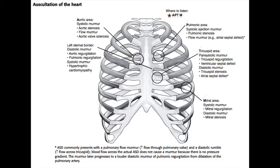The systolic murmur of hypertrophic cardiomyopathy is caused by a collapse of the left ventricle during systole. You want to listen to the area just above the left ventricle, which is at the left sternal border, which is also just near the left ventricular outflow tract — the area just below the aortic valve. This is why you hear the murmur of hypertrophic cardiomyopathy at the area of the left sternal border.